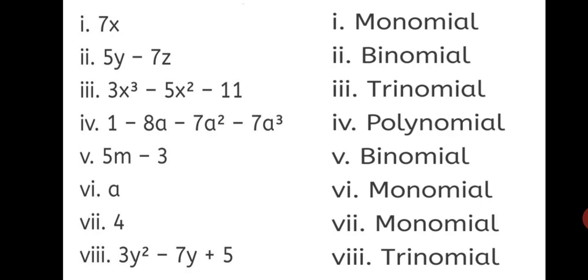Fifth one, 5m minus 3. You can see two terms. So, it is obviously a binomial. Sixth, you see only a. So, a is a single term. It is, though it is multiplied by 1, we don't write 1a, only a. So, it is a monomial. Four. Four also is a single number. So, it is a monomial. Just one term. And eighth one, 3y square minus 7y plus 5. You can see three terms here. So, it is a trinomial.